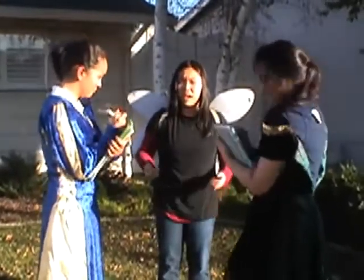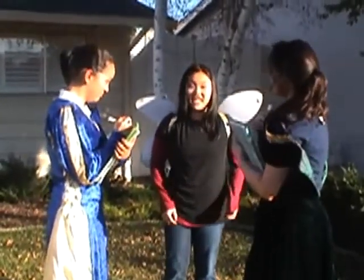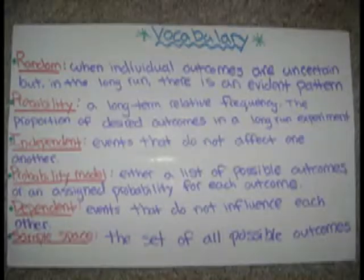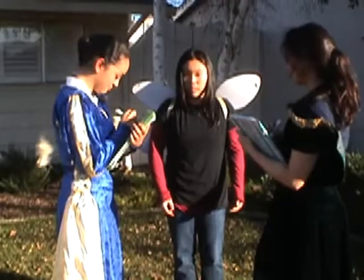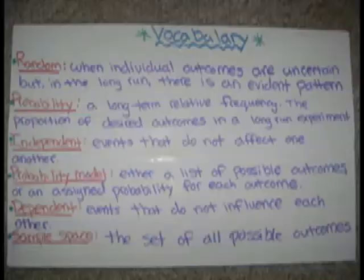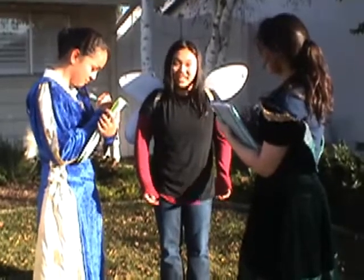You need to know a couple of terms before you go on this journey. The first is random. Random is when individual outcomes are uncertain but in the long run there is an event pattern. The next term is probability. Probability is when long-term relative frequencies and the proportion of desired outcomes in the long-run experiment occur. The next term is independent.